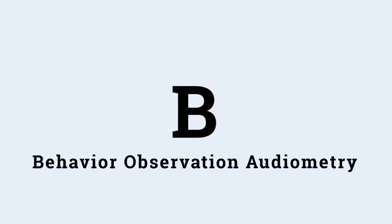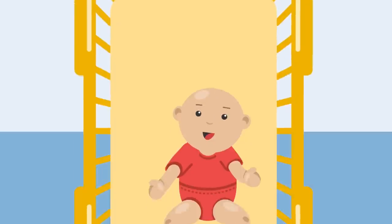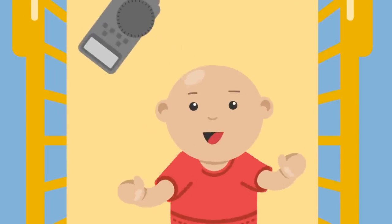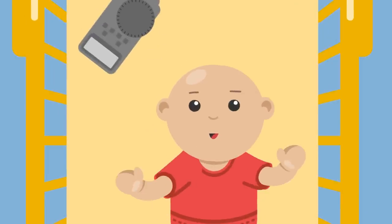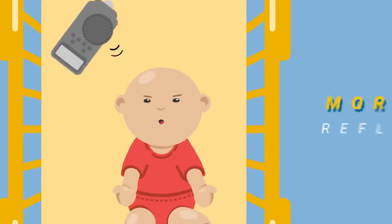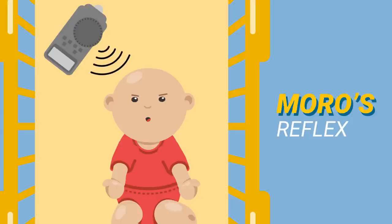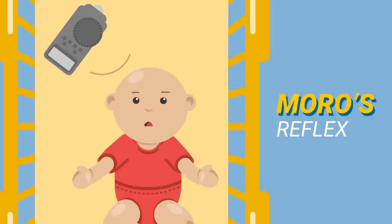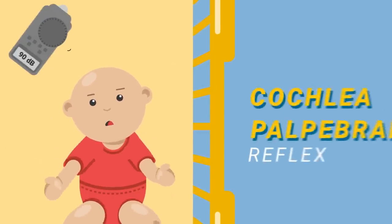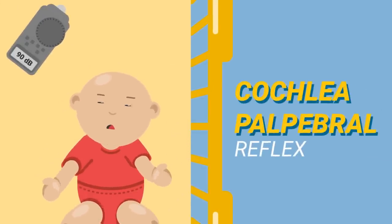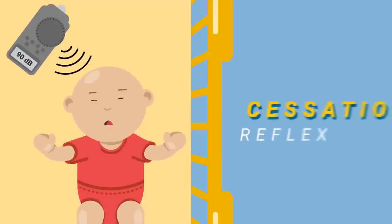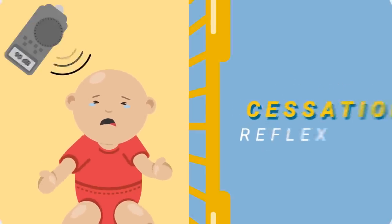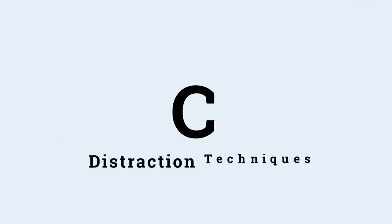Behavior Observation Audiometry: an auditory signal presented to an infant produces a change in behavior — alerting, cessation of activity, widening of eyes, or facial grimacing. Moro's reflex consists of sudden movements of limbs and extension of the head in response to sound of 80-90 decibels. In the cochleo-palpebral reflex, the child responds with a blink to a loud sound. In the cessation reflex, an infant stops activity or starts crying in response to a sound of 90 decibels.